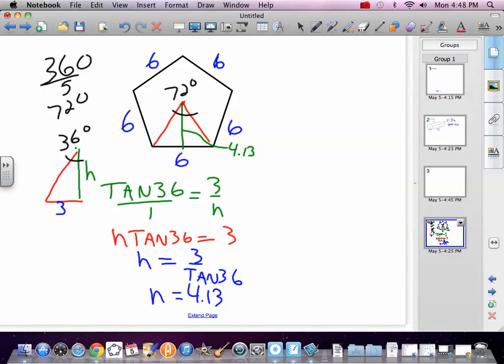Awesome, we know that h is 4.13. Now we're still trying to find the area of this pentagon. So we got one triangle. The area of one triangle is one half bh. One half, the base, the length of our base is 6, height of our triangle is 4.13. We do that, and we got 12.39. And we're going to multiply that by 5 because there are five of those triangles.